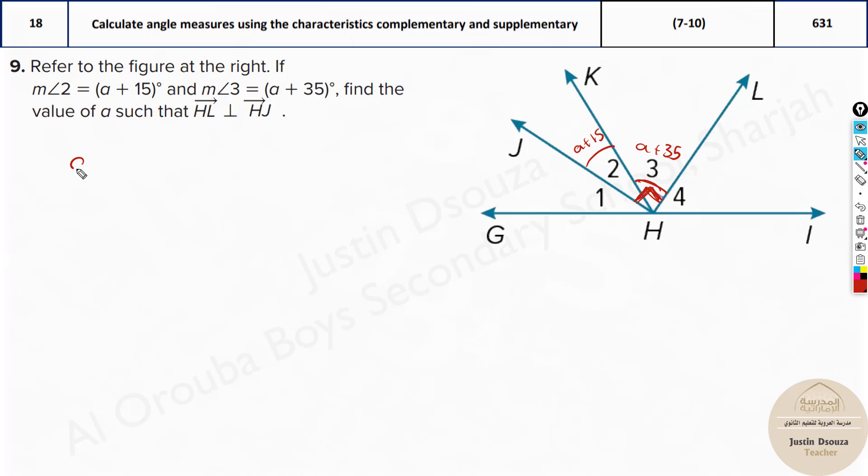When you add this up it must be 90. So you should write the angle, say JHK plus KHL is equal to 90 degrees. Now what I mean is just measure of angle 2 plus measure of angle 3 equals 90 degrees, and then substitute it. a + 15 plus a + 35 equals 90. Now solve it up. It will be 2a. Now 15 plus 35 is 50 equals 90. So I'll take 50 to the other side. It will be 2a equals 90 minus 50, 2a equals 40, and a is equal to 20. That's it. So a value is found out.